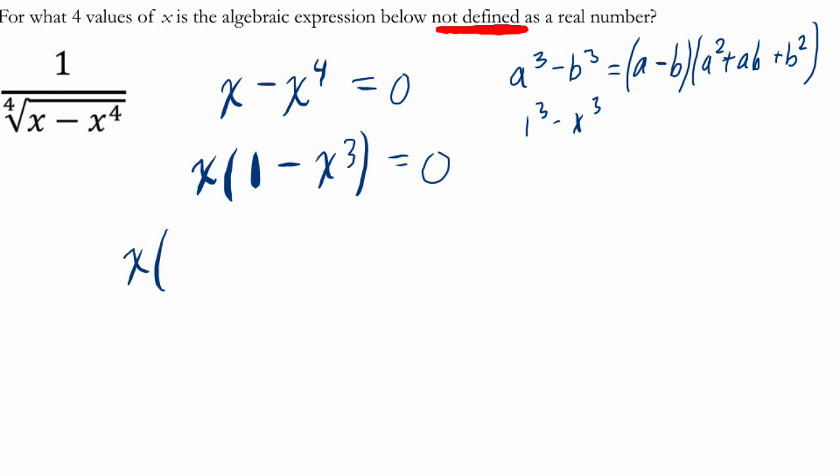Basically, the sign order is the same sign, in this case the difference, the opposite sign, and then positive. And if we do that here, we get 1 minus x times 1 squared, which is 1, plus 1 times x, which is x, plus x squared.